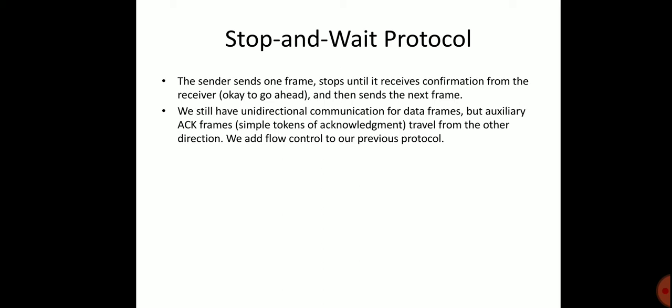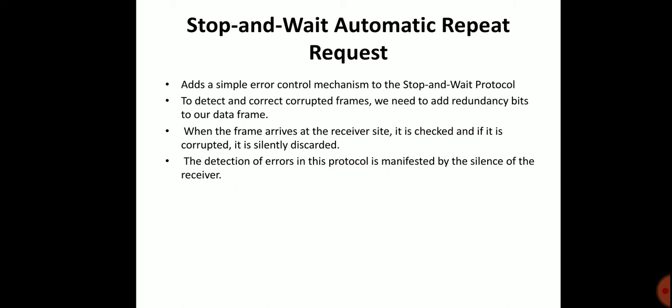The stop-and-wait Automatic Repeat Request (ARQ) protocol adds a simple error control mechanism to the stop-and-wait protocol to detect and correct corrupted frames. We need to add redundancy bits to our data frames. When the frames arrive at the receiver side, they are checked, and if they are corrupted, they are silently discarded. The detection of errors in this protocol is indicated by the silence of the receiver.